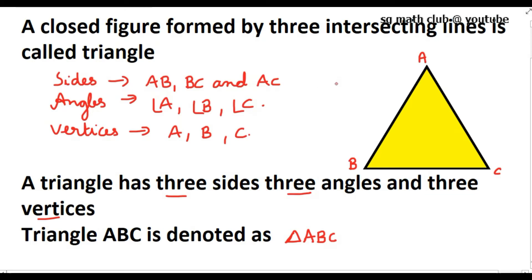A triangle is a closed figure — it should be closed and is formed by three intersecting lines. You can see three lines: one is AB, another is BC, and the third one is AC. So all these things you have studied in your earlier classes.